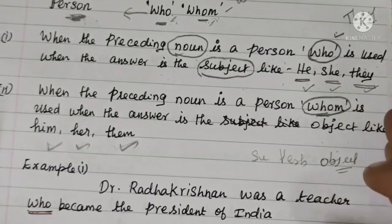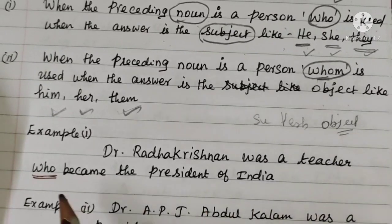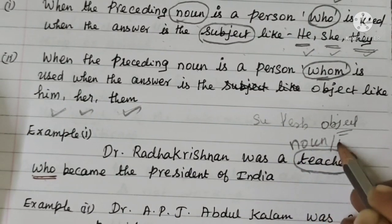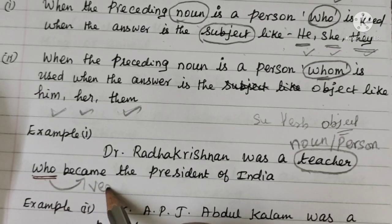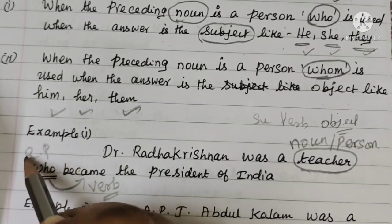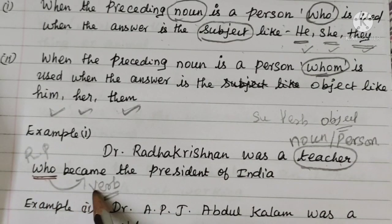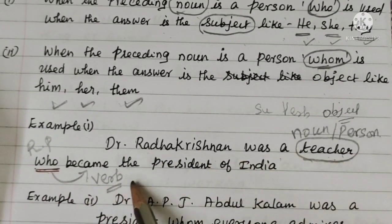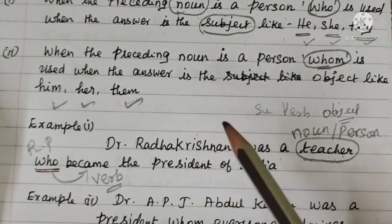Example: Dr. Radhakrishnan was a teacher who became the president of India. Here 'who' is used because the preceding noun is a person. 'Who' refers to Dr. Radhakrishnan, who became the president of India.